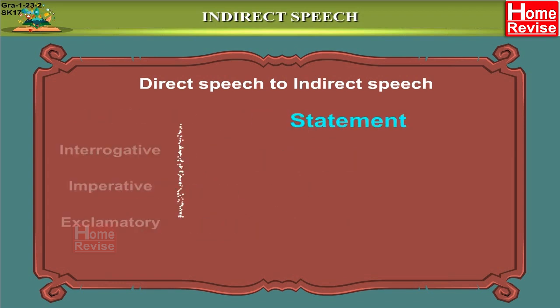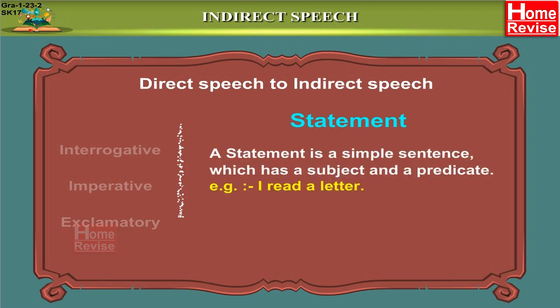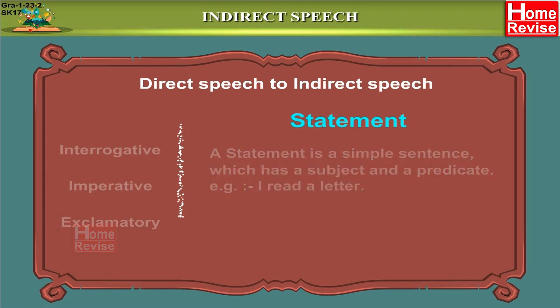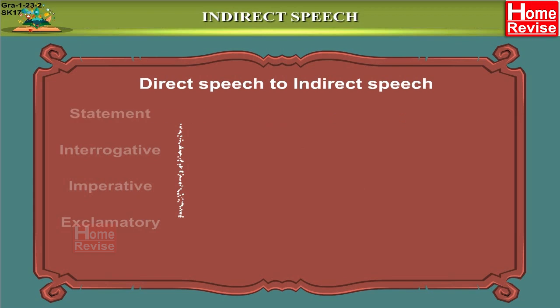The first one is a statement. A statement is a simple sentence which has a subject and a predicate. For example, 'I read a letter' — this is a statement. The second kind of sentence is an interrogative sentence, which is nothing but a question.